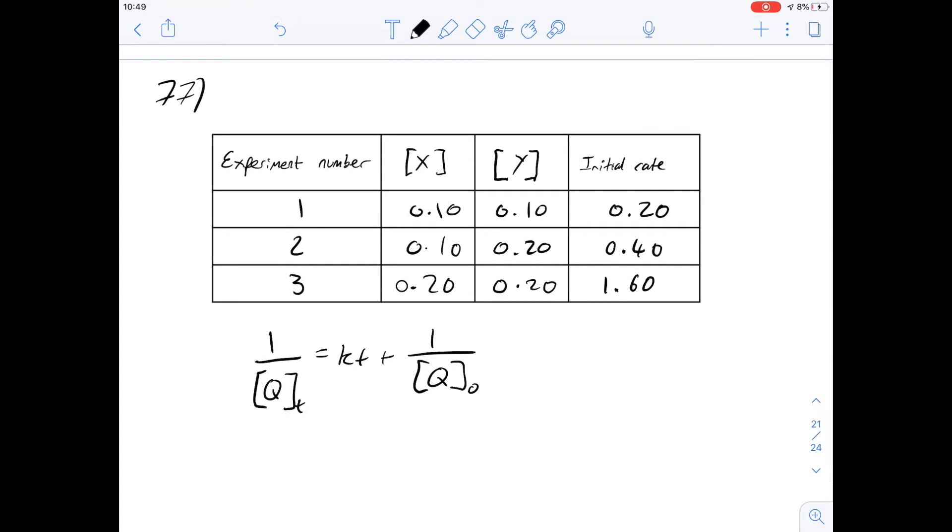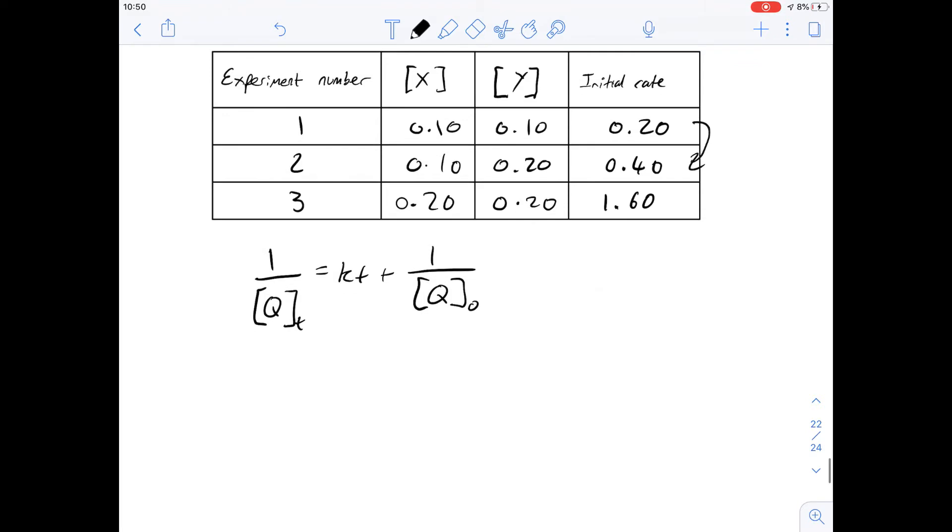If we move on to 25, then we're looking at rates of reaction. And we've got a table here of some results. And we're asked what the rate law for this equation might be, or the rate law for this reaction might be. So if we compare experiment number one and two going from this one to this one, we double the amount of Y. So I'm just going to write times two concentration of Y. And what happens to the rate?